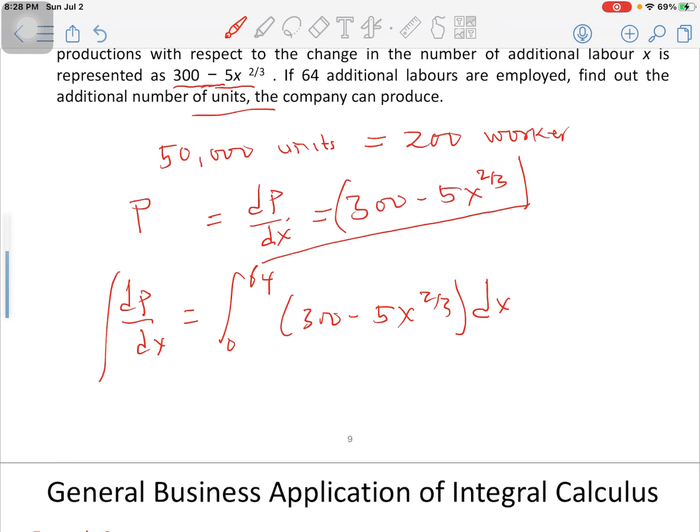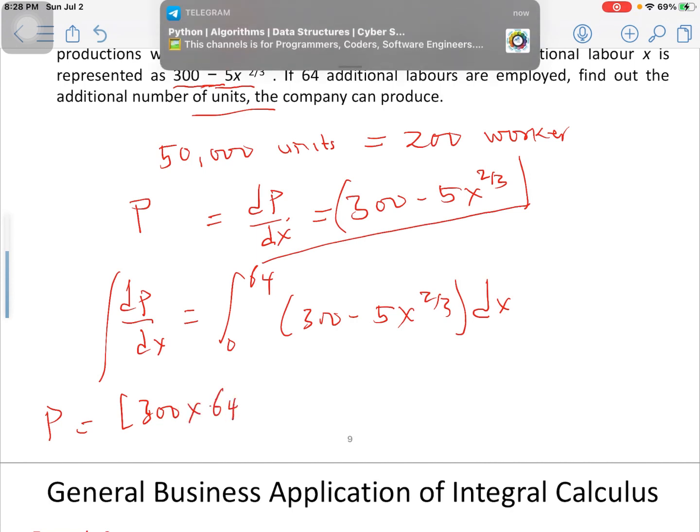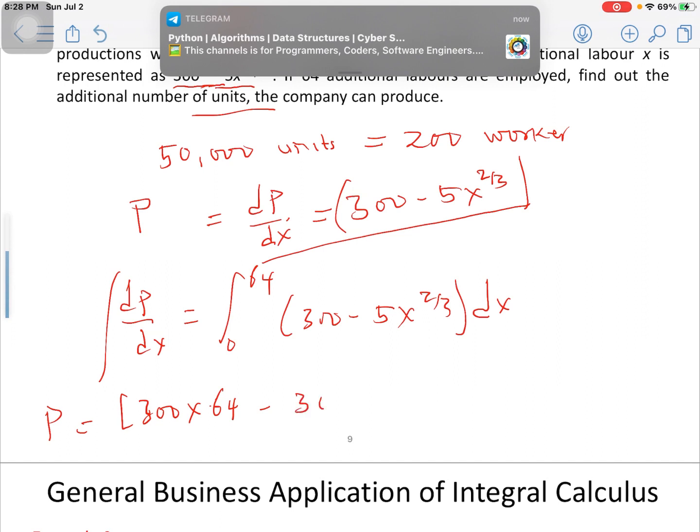In doing this, taking the integral of both sides, we are going to get P, which is the production function. Therefore, integrating our right-hand side, we are going to get 300 times 64 minus...